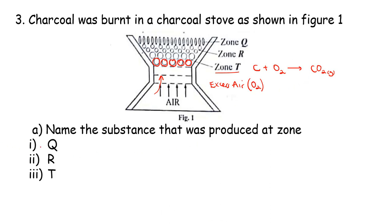So the substance produced at zone Q will be carbon dioxide or you can call it carbon(IV) oxide. It's the same thing. However, as our air continues to move, you'll find that the charcoal particles in region R will not have enough oxygen as compared to the ones in T.